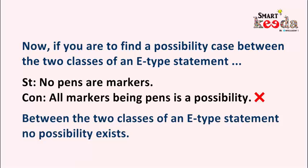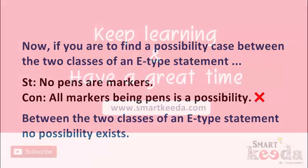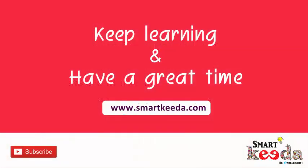So friends, you have learned here half of the possibility cases of type 2. In the next video, we'll take the next two kinds — I and O type statements — and we'll discuss the possibility cases in them. Till then, keep learning and have a great time.